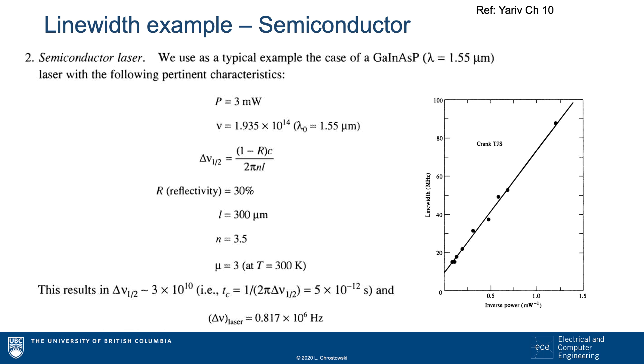As an example, in a Fabry-Perot semiconductor laser, we can find the linewidth is typically around 1 MHz, and experimentally we can see that as we increase the optical power, we will reduce the linewidth.